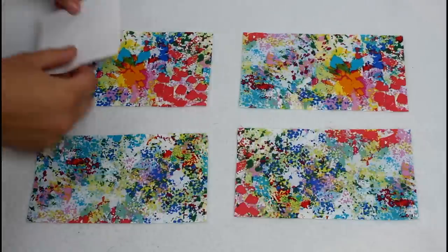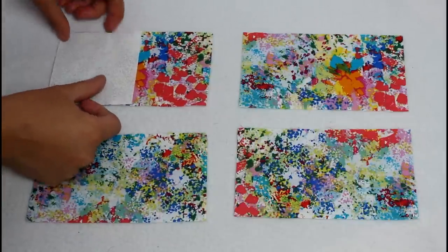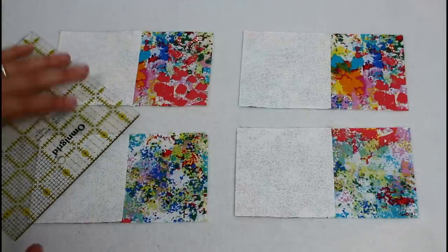Lay out the rectangles and place one of the white squares on right sides together lining up the top, bottom, and left side.